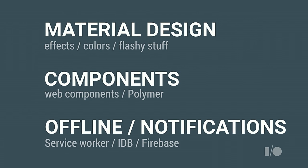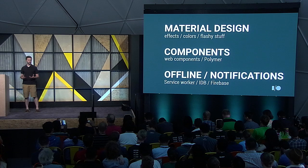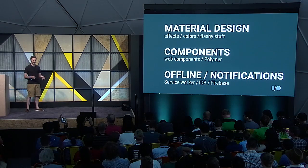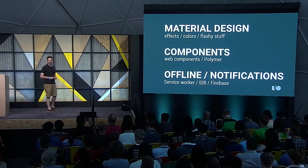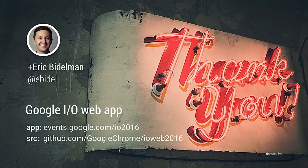That's it — material design, components, offline notifications, how we built the web app this year. Used Firebase, used Material, shared a back end with the different versions of the app. A lot of stuff to cover in 45 minutes. The code has been open sourced today — if you want to check it out, file issues, ask questions, or send PRs, it's on GitHub under Google Chrome IOWeb 2016. The app is at that URL. Feel free to hit me up on Twitter. I really appreciate you coming out today and thank you for everyone watching the video.